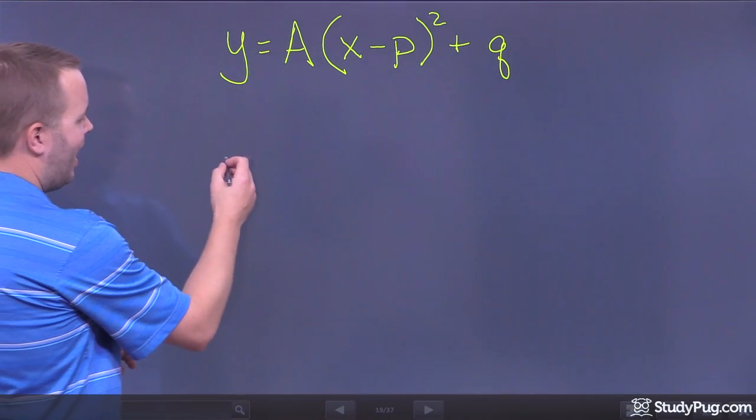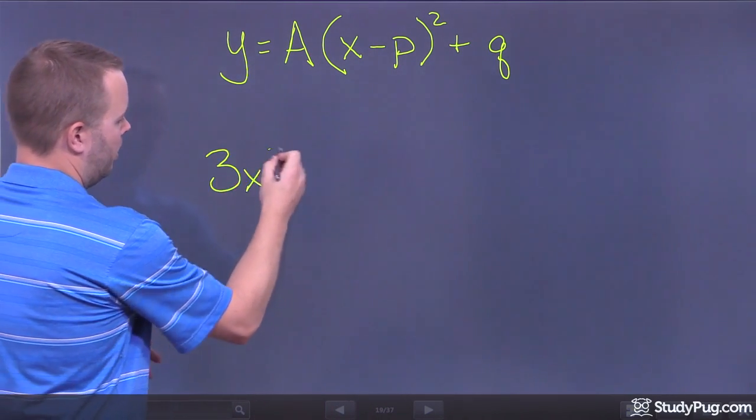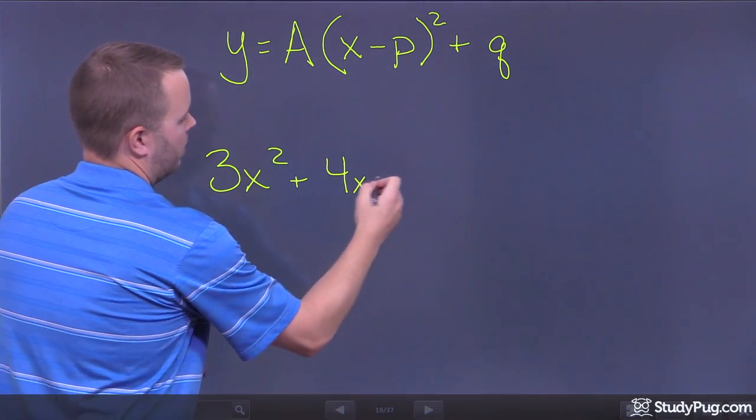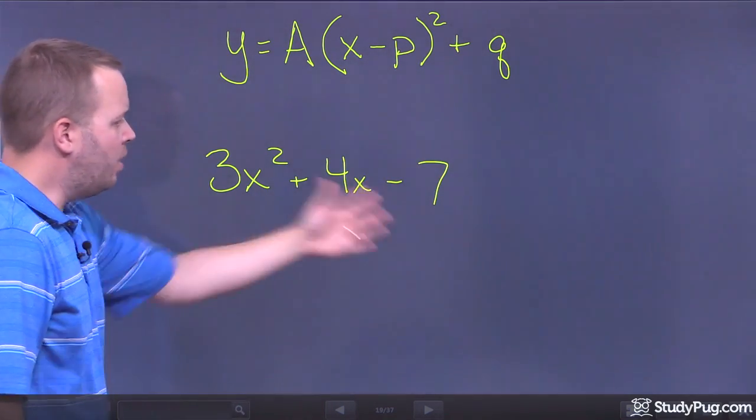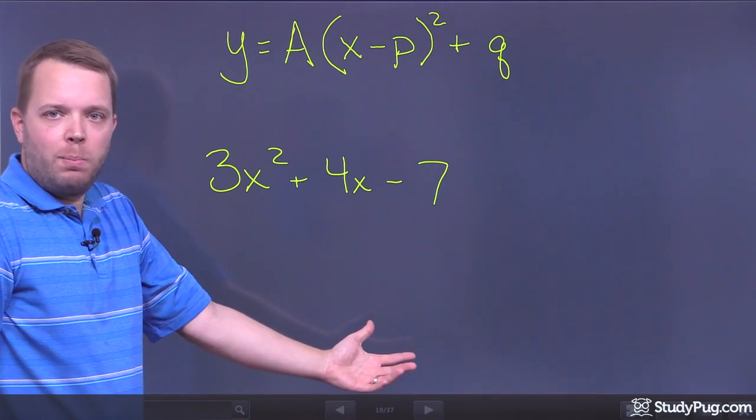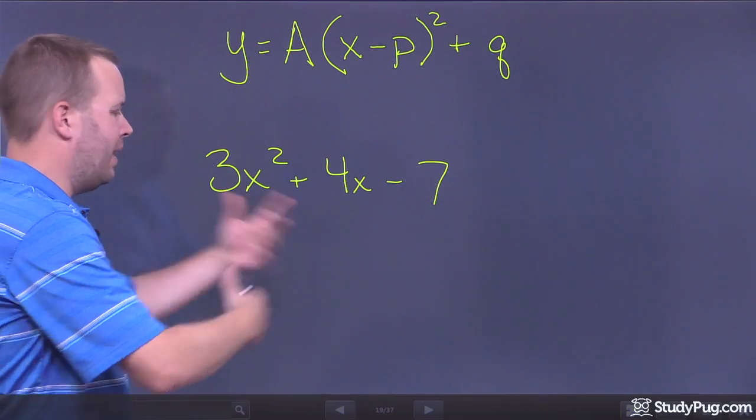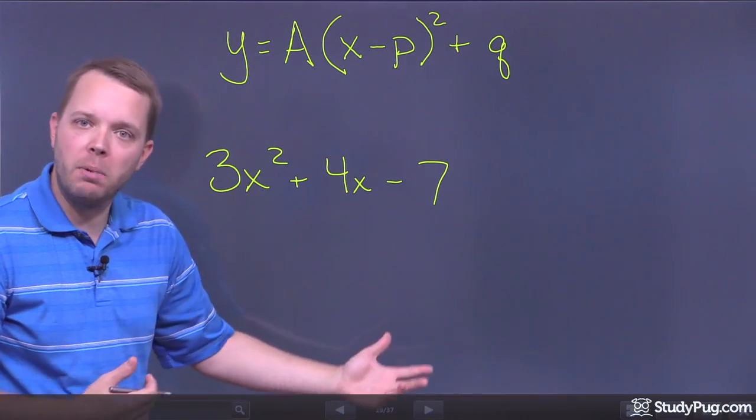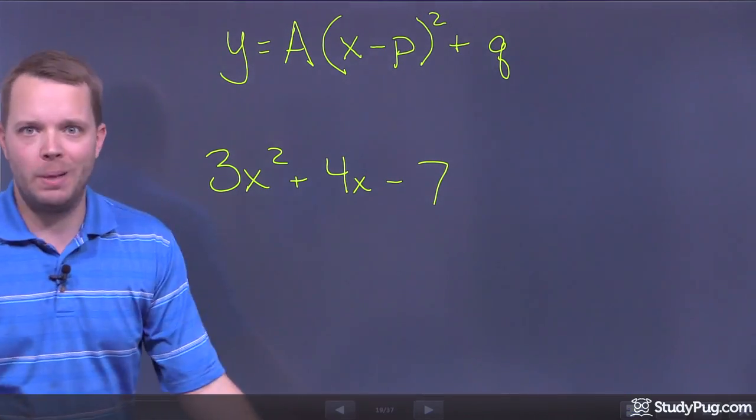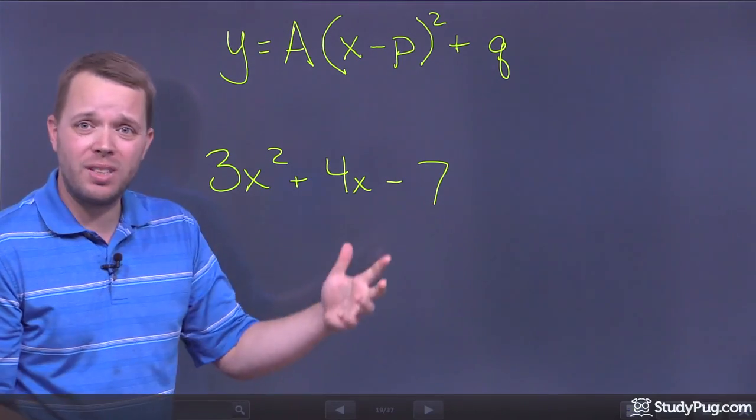So the problem is, if I had something like 3x² plus 4x minus 7, well, I don't quite know what that looks like just by checking it out. I'd have to factor it, maybe find its roots. And that might take me some time. I might not be able to factor it, so I'd have to use quadratic formula. And then I still don't quite know where the vertex is.